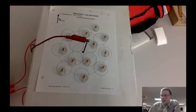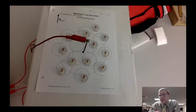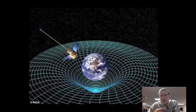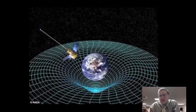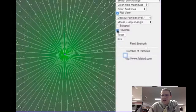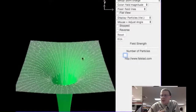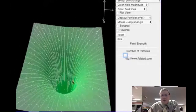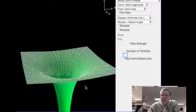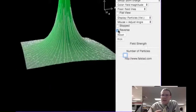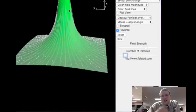When we've talked about fields in the past, we've said that a field is created by something that it also affects. When we talked about gravity, gravity was created by two masses attracting each other — so gravity is created by mass and affects mass. For electric fields, you need an electric charge to create one, and that charge then affects other charges out there.